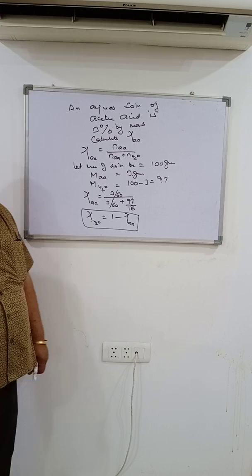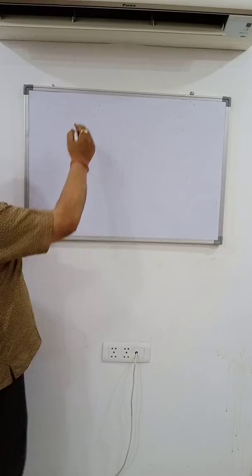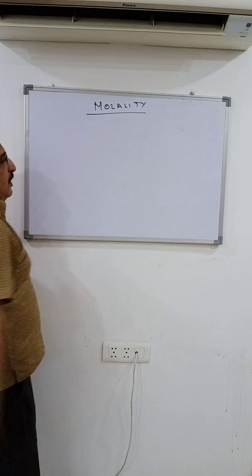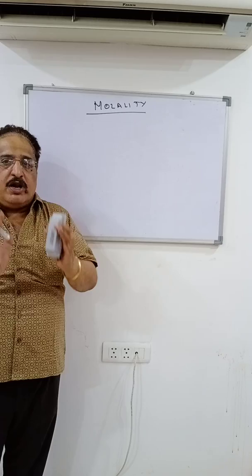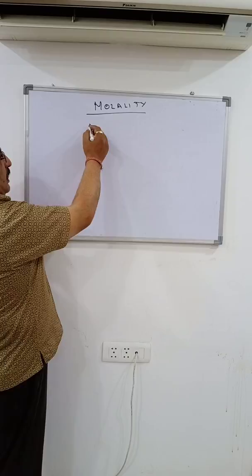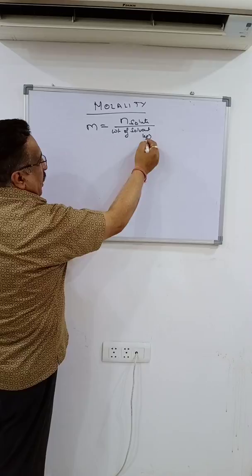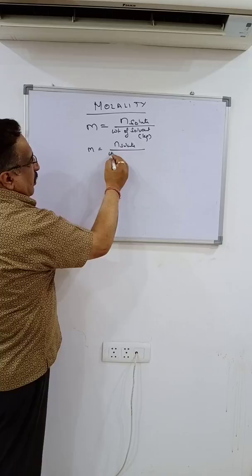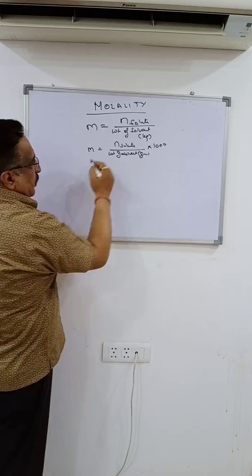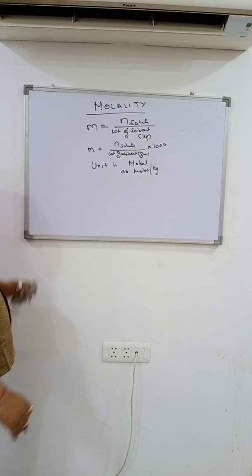Moving on to the second method of expression of concentration, that is molality. Molality is also a mass-dependent property. It can be defined as the number of moles of solute per unit mass of the solvent. It is denoted by small m. Small m equals number of moles of solute upon weight of solvent in kilograms, or if in grams, number of moles of solute upon weight of solvent in grams divided by 1000. Its unit is molal or moles per kilogram.